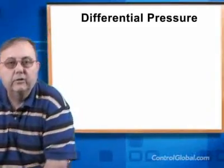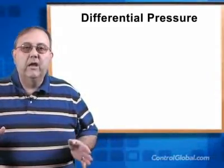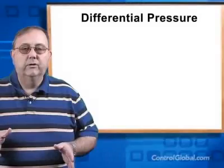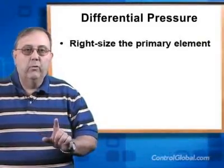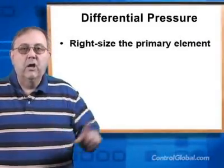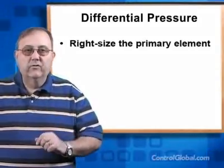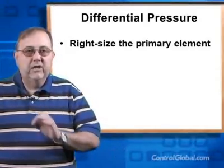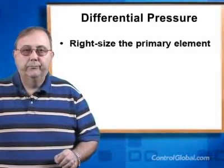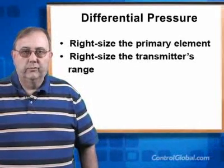Fluid characteristics play a huge role in determining the accuracy of a differential pressure flow meter installation. Be sure that the flow rate of the fluid is within the accurate flow range of the flow element. Do not oversize or undersize flow elements, even if you expect more flow in later years. And make sure that the transmitter is properly ranged, too.